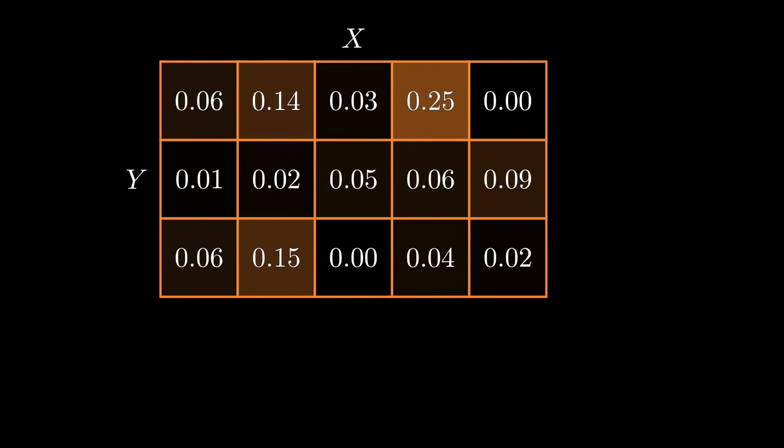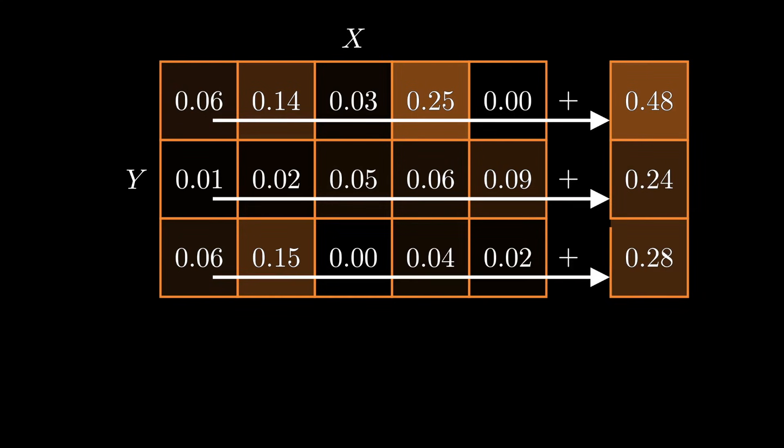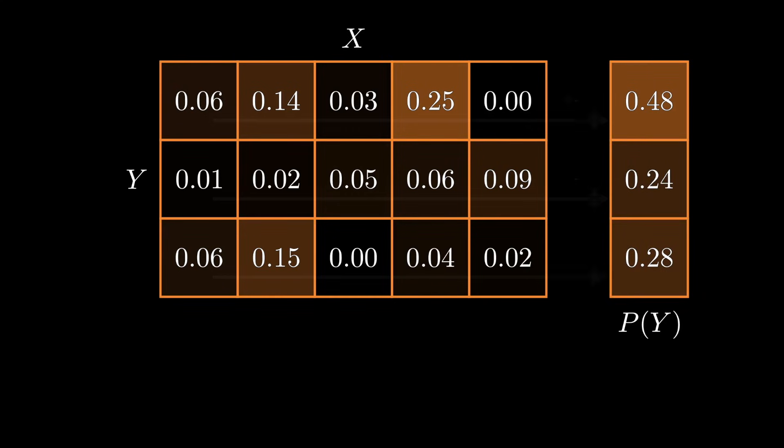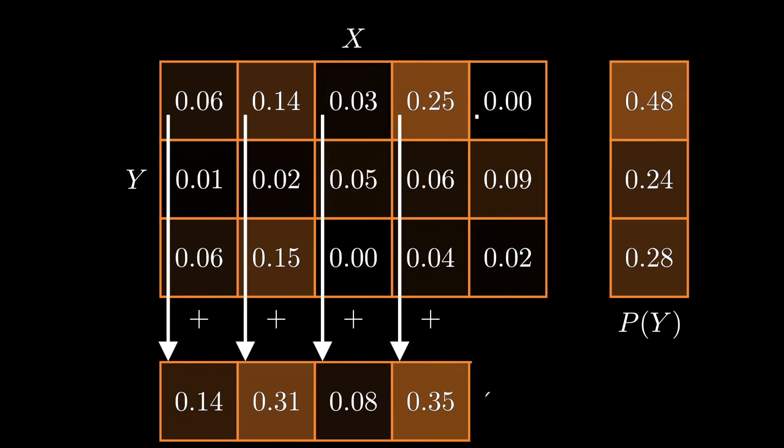The probability mass function is then a table with 15 entries in it that all sum to one. To compute the marginal distribution over y, we would sum over the rows. To compute the marginal distribution over x, we would sum over the columns.